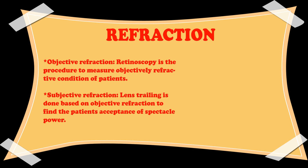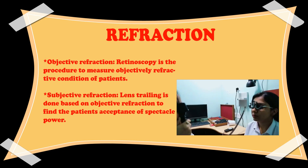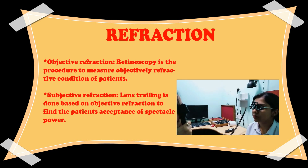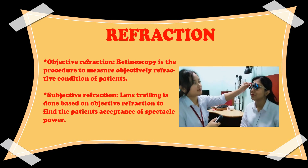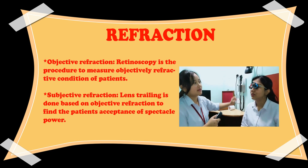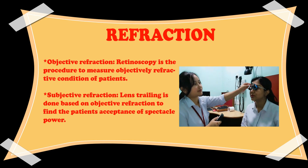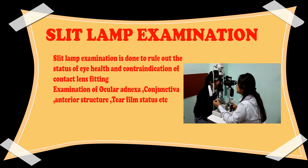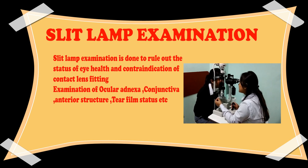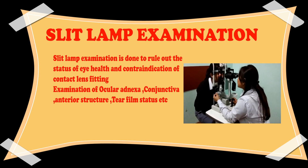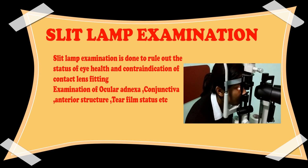We do refraction in two steps: objective refraction and subjective refraction. Objective refraction is performed with the help of retinoscopy, and subjective refraction is the procedure for determining lens acceptance by trial lens processing. Slit lamp examination is the procedure for finding any abnormality in the ocular adnexa and anterior segment of the eye.